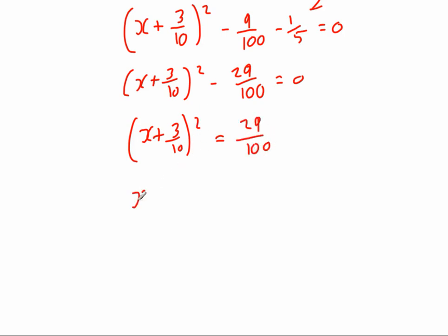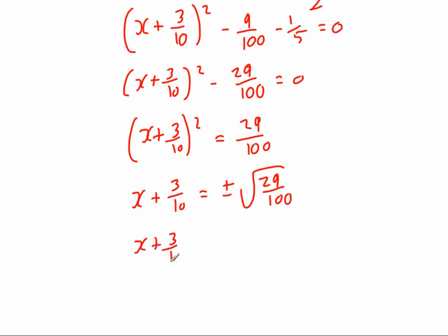Then we're going to square root, so that gives us x plus 3 tenths equals — be careful — whenever we square root here it's going to be plus or minus the square root of 29 over 100. Remember, whenever you square root a fraction you can square root the numerator and square root the denominator separately. That gives us x plus 3 tenths equals plus or minus the square root of 29 — which can't be simplified — over 10, since the square root of 100 is 10.